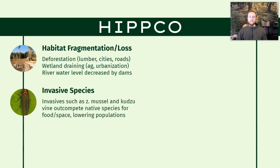The I stands for invasive species. This is largely due to human activity because we transport species around the globe in a way that was never possible before global transport. We have the zebra mussel, the emerald ash borer, and kudzu vine. When we introduce these invasives, they typically out-compete natives and consume food or other resources faster than natives can, which reduces biodiversity.